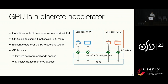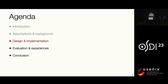Before diving into technical details, let me review how GPUs work at a high level. A GPU works as a discrete operator: an application enqueues operations into a host command queue, which is also mapped into the GPU address space. The GPU executes operations and kernel functions inside GPU memory, then exchanges data over the PCIe bus — which is untrusted. GPU drivers are responsible for initializing hardware and virtual address spaces, and for multiplexing device memory and device queues.